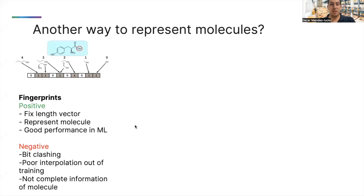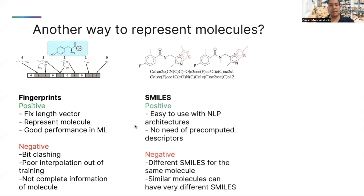There are many ways to represent molecules for machine learning models, such as fingerprints, which in general present very good performance in machine learning models. However, they suffer from what is called bit clashing. An alternative is to use SMILES directly on NLP architectures, such as RNNs or transformers. However, the fact that different SMILES can encode the same molecule, and what is worse, that very similar molecules can have very different SMILES, makes them not ideal.